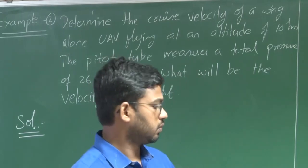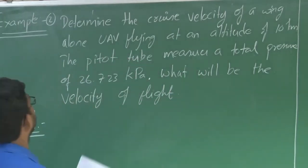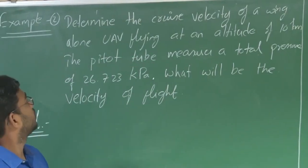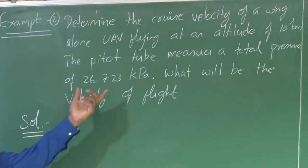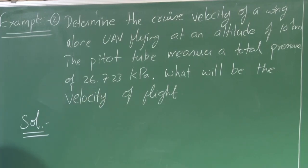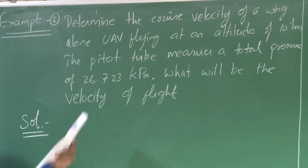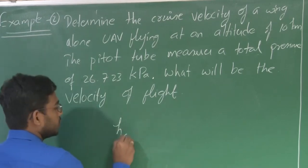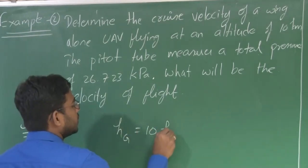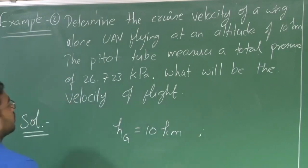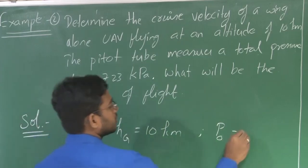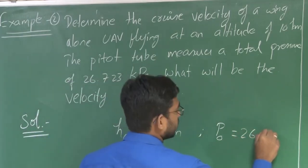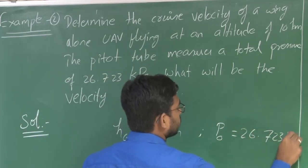Let us look at example 2. Determine the cruise velocity of a Winglon UAV flying at an altitude of 10 kilometers. The pitot tube measures a total pressure of 26.723 kilopascals. What will be the velocity of flight? We need to determine the velocity of flight at 10 kilometers altitude. H_g is 10 kilometers and the total pressure at 10 kilometers altitude is 26.723 kilopascals.